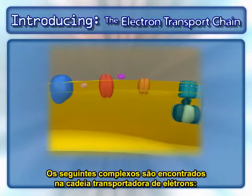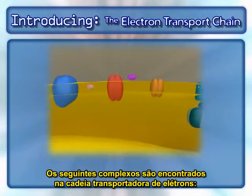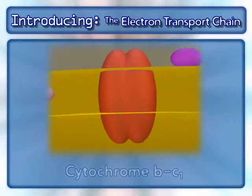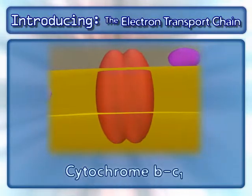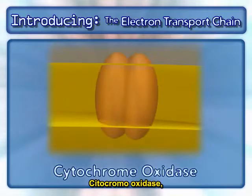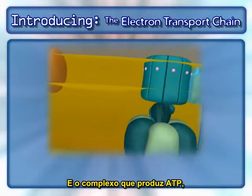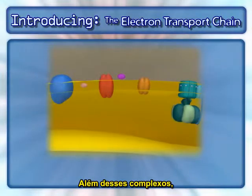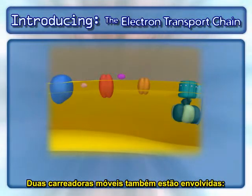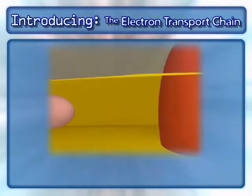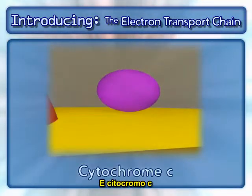The following complexes are found in the electron transport chain: NADH dehydrogenase, cytochrome BC1, cytochrome oxidase, and the complex that makes ATP — ATP synthase. In addition to these complexes, two mobile carriers are also involved: ubiquinone and cytochrome C.